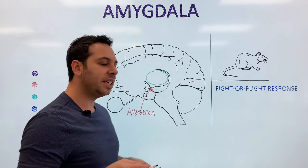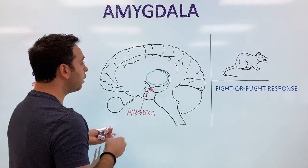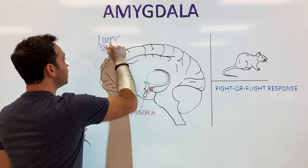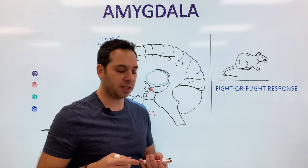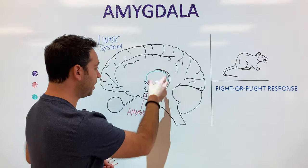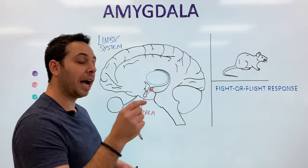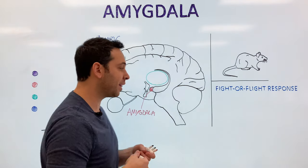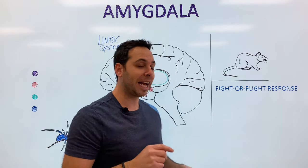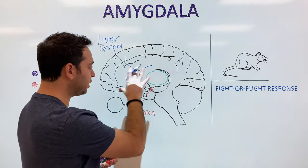Another way to think about the amygdala is that it's part of an area called the limbic system. A lot of these structures are part of what we call the limbic system. The limbic system typically involves two things: emotions and memories. All of these structures — the thalamus, amygdala, hippocampus, hypothalamus — deal with emotions or memories. If you ever read something in a psych textbook about the emotional center of our brain, they're talking about the limbic system.